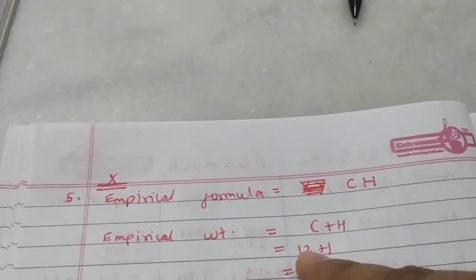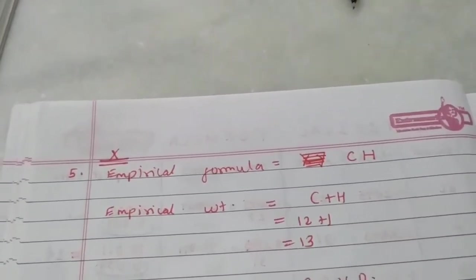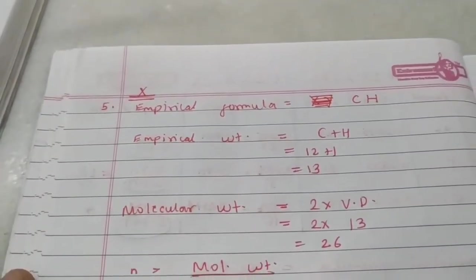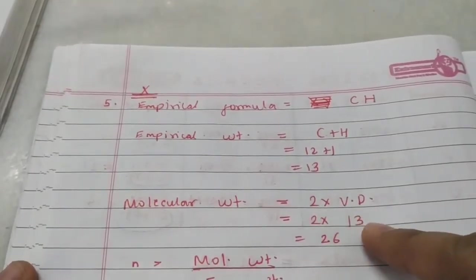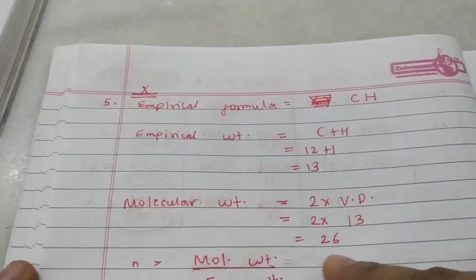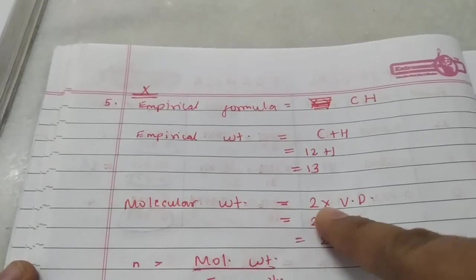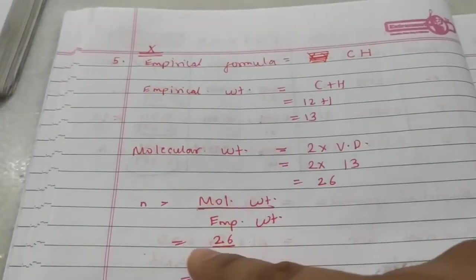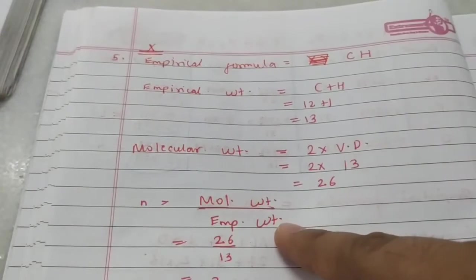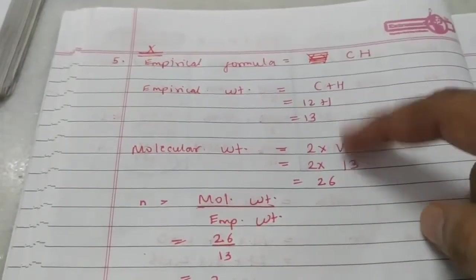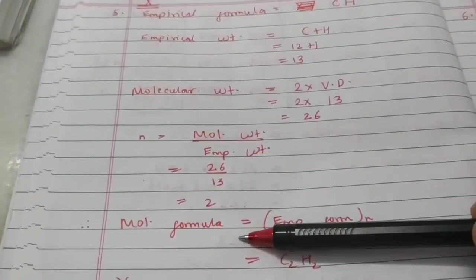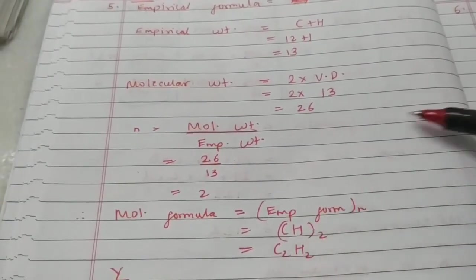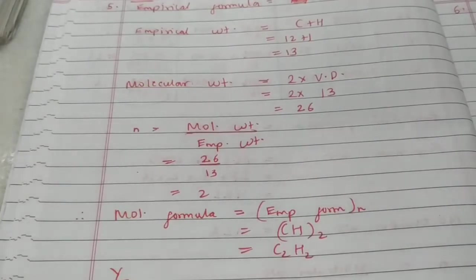Step 1: Empirical formula is CH. Step 2: Empirical weight = 12 + 1 = 13. Step 3: Molecular weight is twice the vapor density. Vapor density was given as 13, so molecular weight = 26. Step 4: n = molecular weight ÷ empirical weight = 26 ÷ 13 = 2. Step 5: Molecular formula for X = 2 × CH = C2H2, which is ethyne — a compound we'll study in organic chemistry.